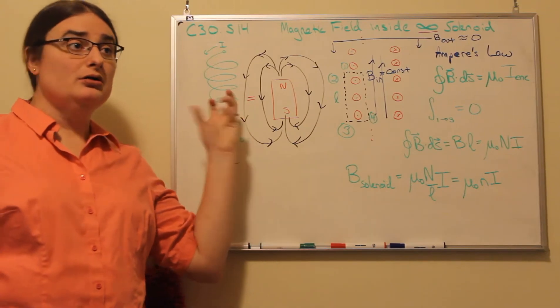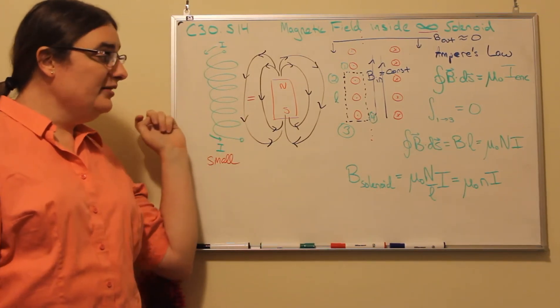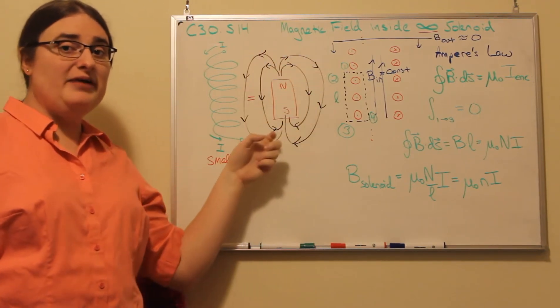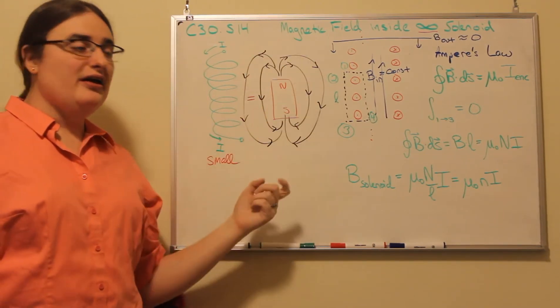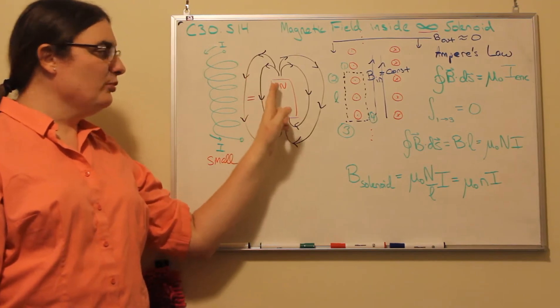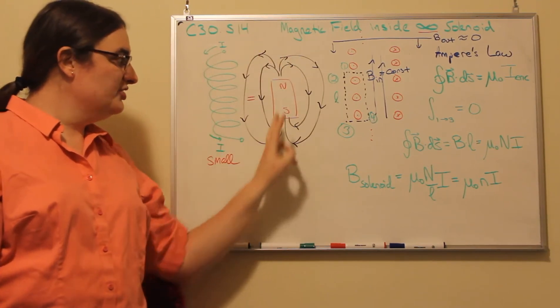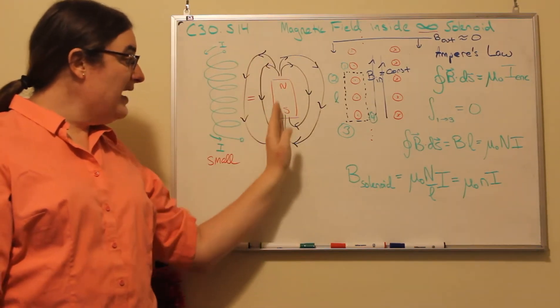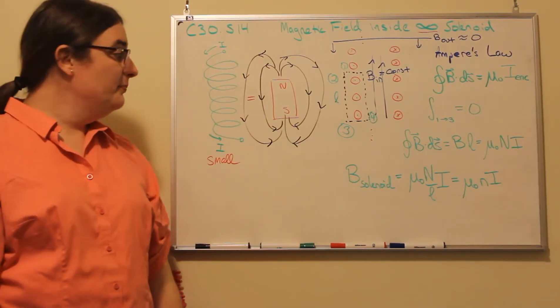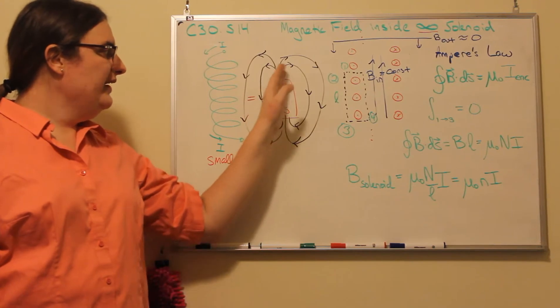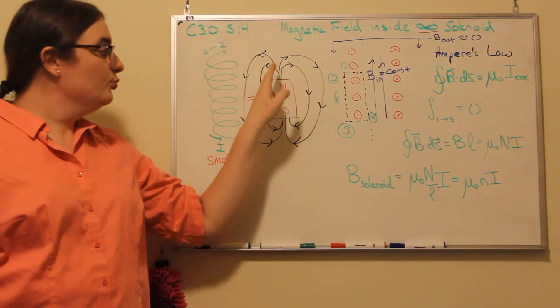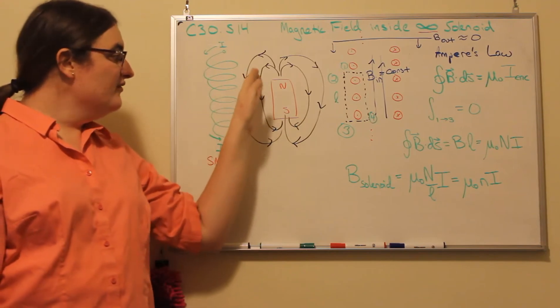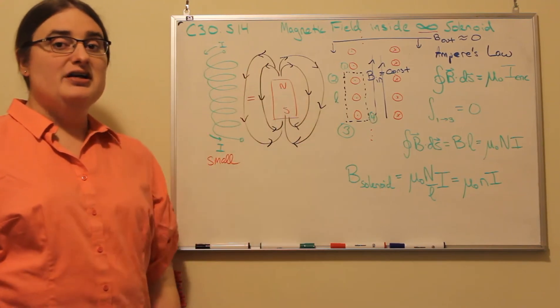What happens if we have a very small solenoid is we end up getting a magnetic field that outside the solenoid looks a lot like the magnetic field that you see in a bar magnet, where it loops around from one end, which on a bar magnet we'd call the north pole, back to the south pole. But what you get with that bar magnet is a really strong magnetic field right at each end and a very weak magnetic field in the middle.